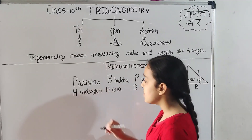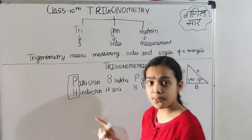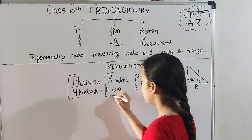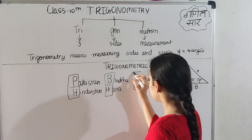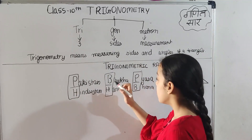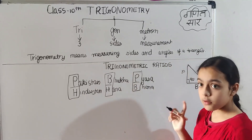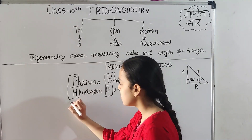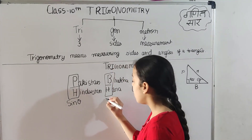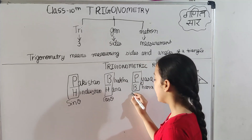We will use the capital letters of this slogan. P upon H gives sin theta, B upon H gives cos theta, and P upon B gives tan theta. This means perpendicular upon hypotenuse is sin theta, base upon hypotenuse is cos theta, and perpendicular upon base is tan theta.